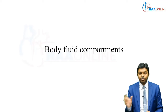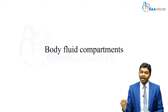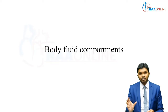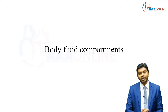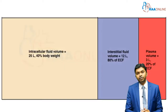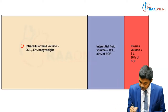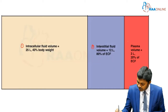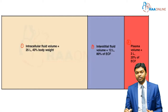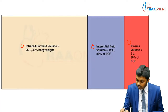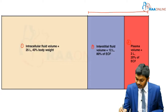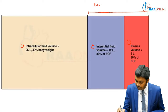The last two compartments — intravascular as well as interstitial — are put together and called extracellular fluid waters. So body fluids are distributed in three compartments: number one, intracellular fluid; number two, interstitial fluid; number three, intravascular fluid. These two compartments — interstitial fluid and intravascular fluid, that is nothing but blood — are together called extracellular fluid.